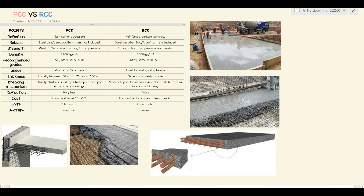For the recommended grades: the grades most often used for PCC mixtures are M5, M10, M15, and M20. For RCC, the grades are M20, M25, M30, and M35. Even in IS456-2000, it states that M20 is the minimum grade for RCC works. So M20 is the minimum grade for RCC.